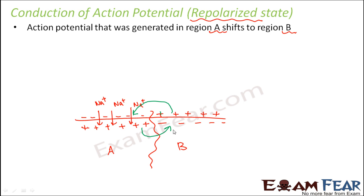Now when this happens, the inner surface of region B will become positively charged and the outer surface of region B will become negatively charged. And what happens to the previous region A? It goes back to its polarized state — inside negative and outside positive. That is why it is said to be the repolarized state.